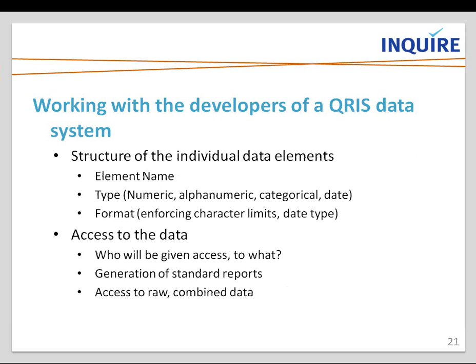Once you've established the relationship with the developer and what your needs are, you're going to want to work with your developer on the individual data elements that will make up your system. This is when you start outlining — once you have a clear idea of what you want to link, what information you want to access, what information needs to be updated by whom — what those specific data elements are going to look like and how they're formatted.